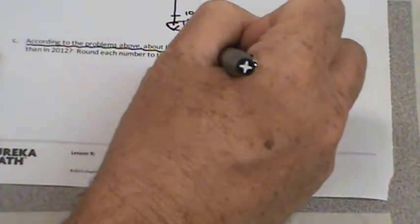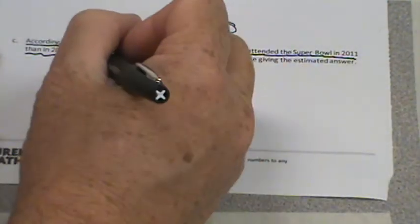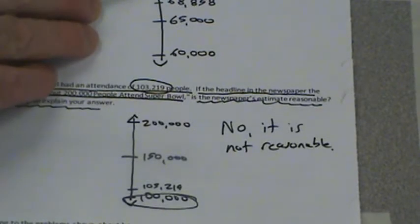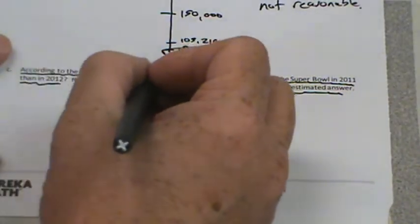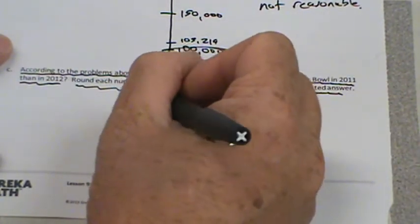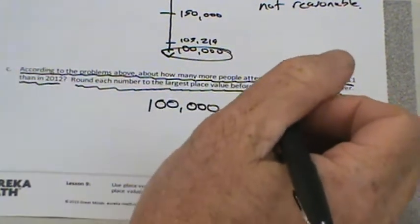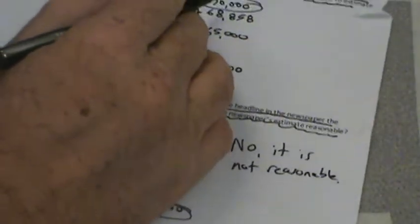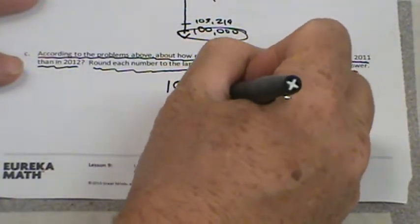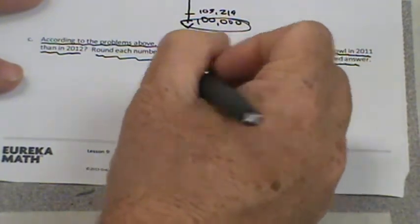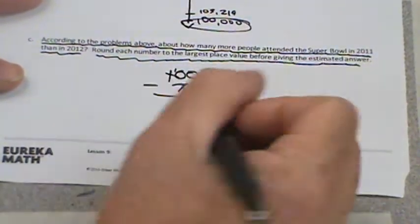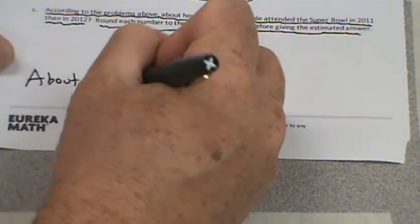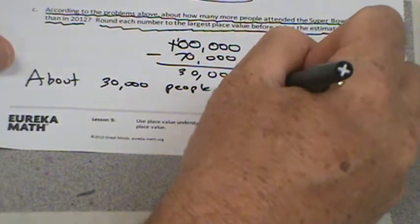According to the problems above, about how many more people attended the Super Bowl in 2011 than in 2012? We're going to round each number to the largest place value before giving the estimated answer. The largest place value: that was 70,000, and that's 100,000. So about 100,000 people attended in 2011, and about 70,000 people attended in 2012. 100,000 minus 70,000, we have a little borrowing there. 10 minus 7 is 3. So about 30,000 people more attended.